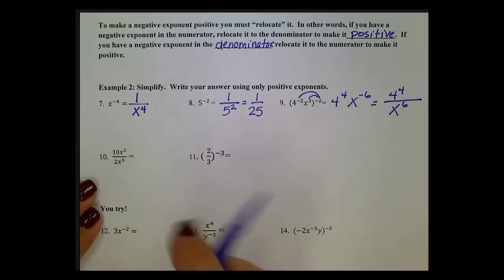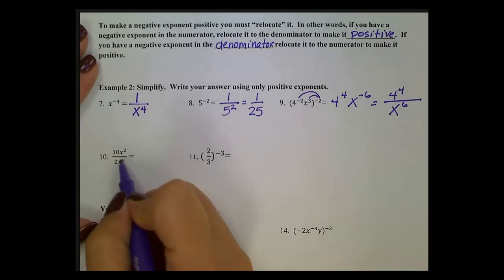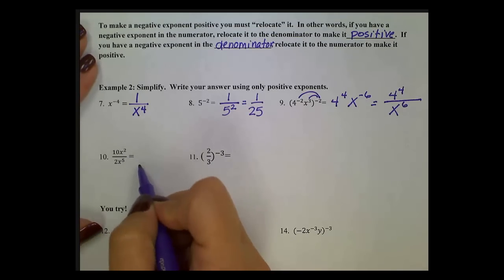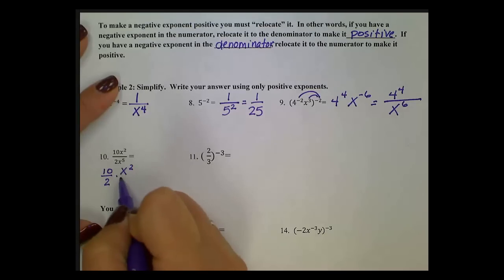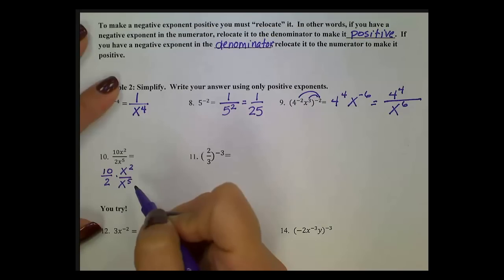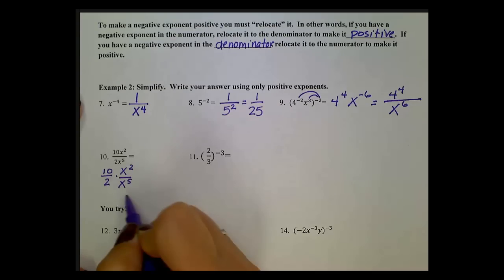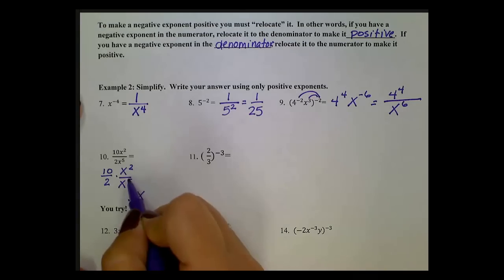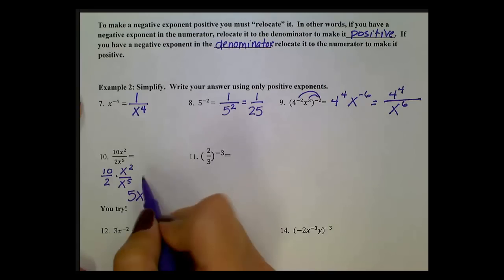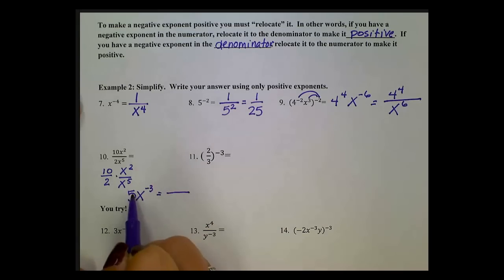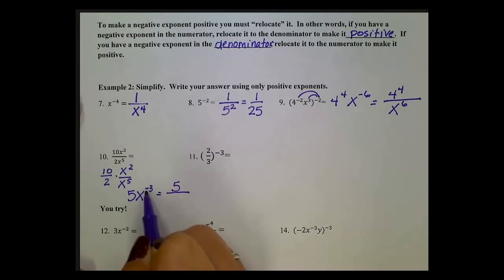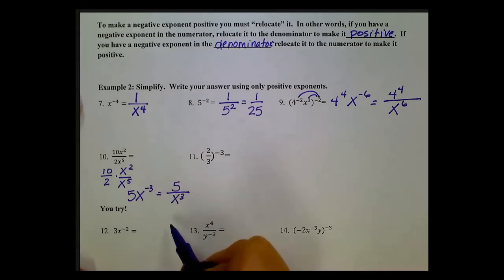In number 10, I have 10x squared divided by 2x to the 5th. Split up the number part and the variable part: 10 divided by 2, and x squared divided by x to the 5th. 10 divided by 2 is 5. Dividing with the same base, subtract the exponents: 2 minus 5 gives negative 3. I see a negative exponent, so I make a fraction bar. The 5 has no negative exponent, so it stays. x to the negative 3 gets relocated to the denominator, giving us 5 over x to the 3rd.